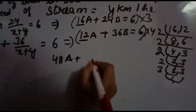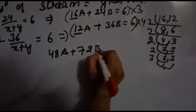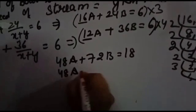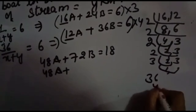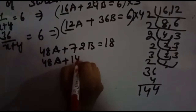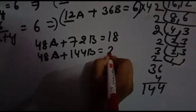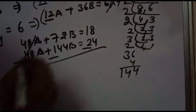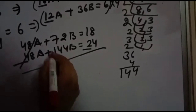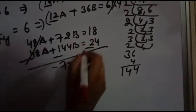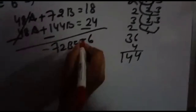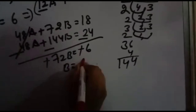Now subtract equation 1 from equation 2. The 48a terms cancel. 144b minus 72b gives 72b, and 24 minus 18 gives 6. So 72b equals 6, which means b equals 6 over 72, which simplifies to 1 over 12.